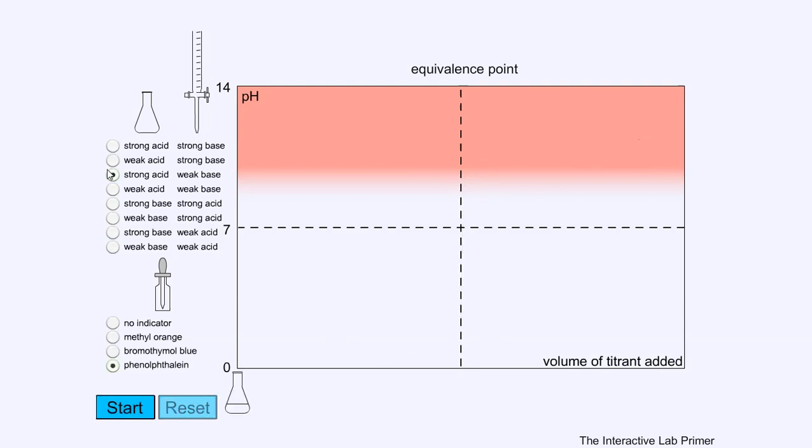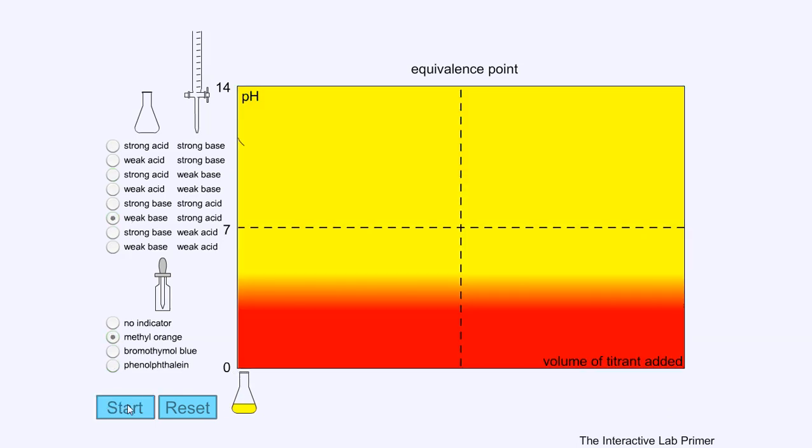Now if I do a weak base strong acid, which is simply the reverse, and I try with methyl orange, notice if I start with a weak base there's a sudden drop before it levels out and then I get my steep drop again. Finishing with a strong acid it's simply a gentle slope. Notice that again my end point, which is around a pH of 5 or so, is similar to the equivalence point.